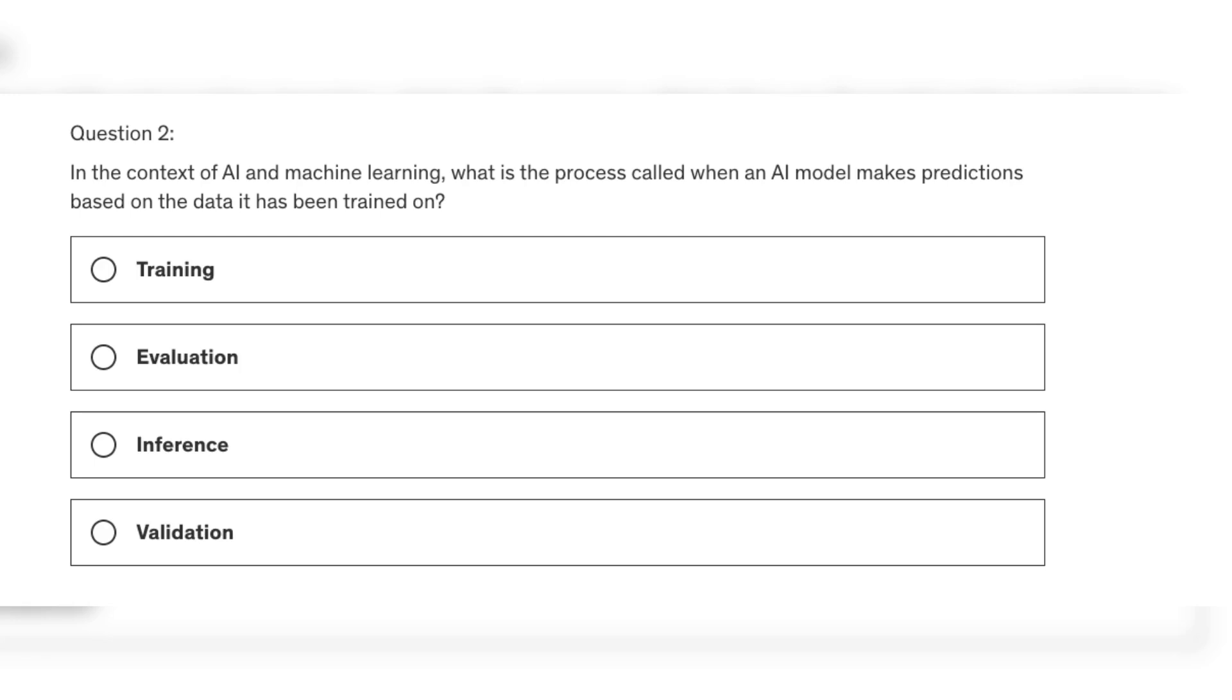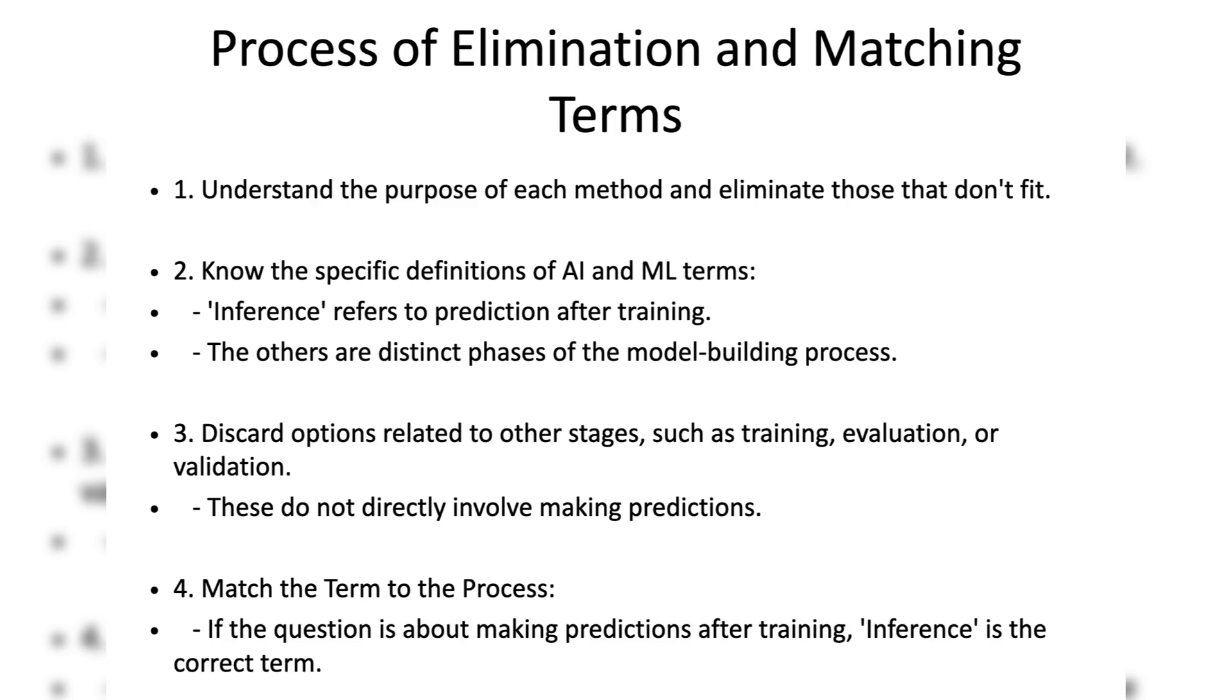Now move to question number two: In the context of AI and machine learning, what is the process called when an AI model makes predictions based on the data it has been trained on? Option A: Training. Option B: Evaluation. Option C: Inference. Option D: Validation. As with question one, the first step is to understand the purpose of each method and then eliminate those that don't fit.